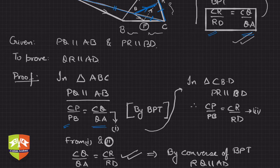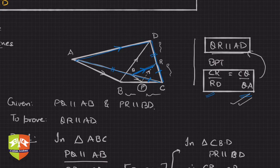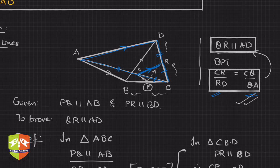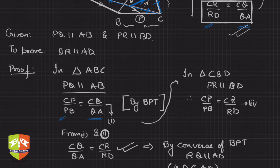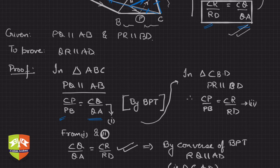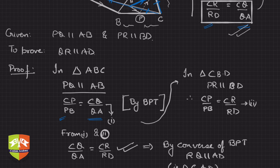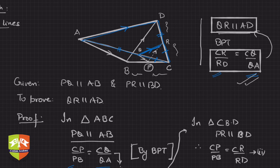By application of BPT and its converse, we proved that the given lines are parallel. The key learning is: when you see a triangle with discussions on parallel lines, think Basic Proportionality Theorem, and with some manipulation using BPT and its converse, you can solve these kinds of problems.